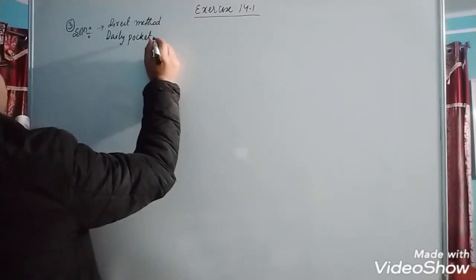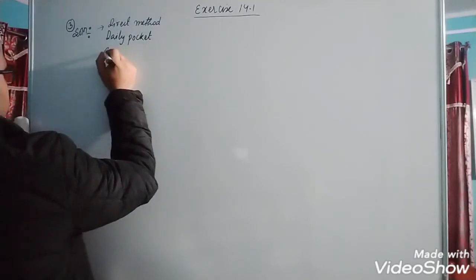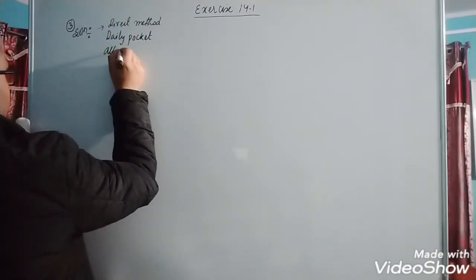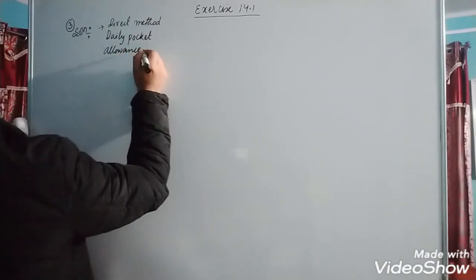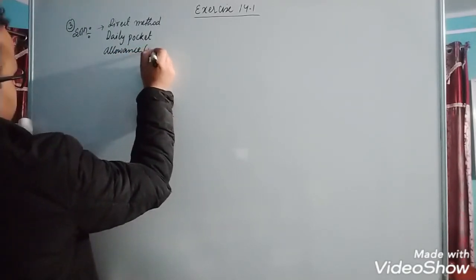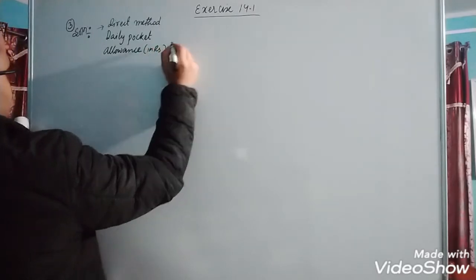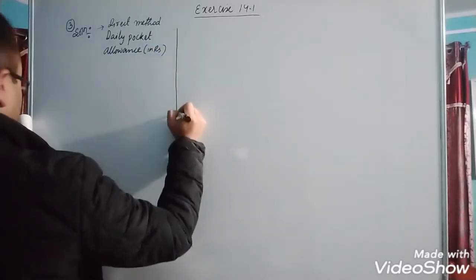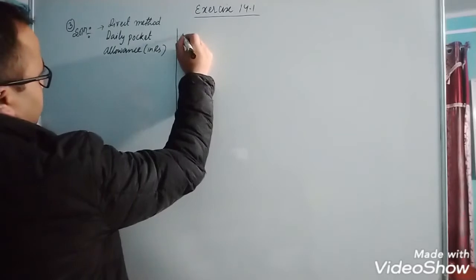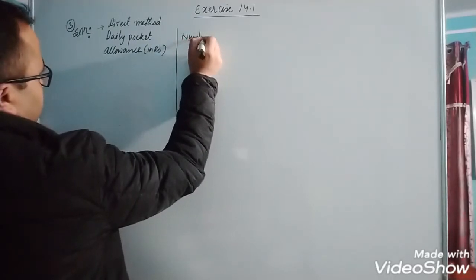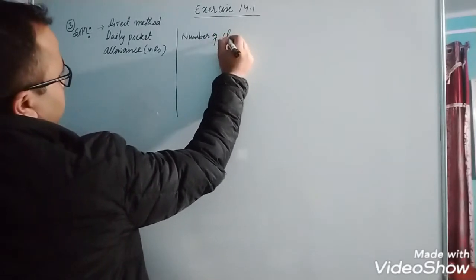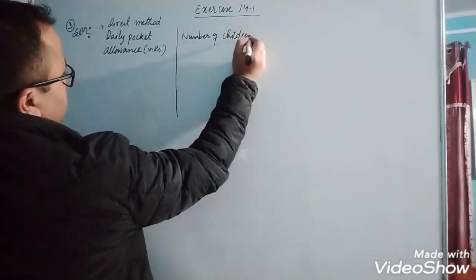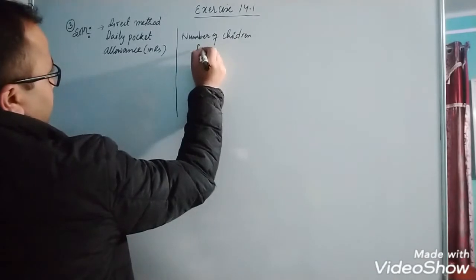First column is daily pocket allowance in rupees. Next is number of children, that is frequency fi.